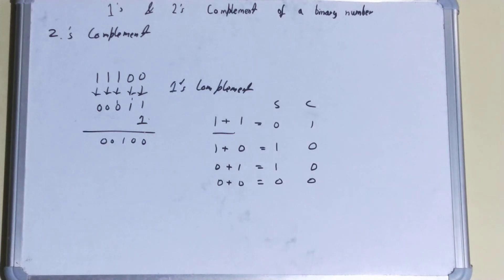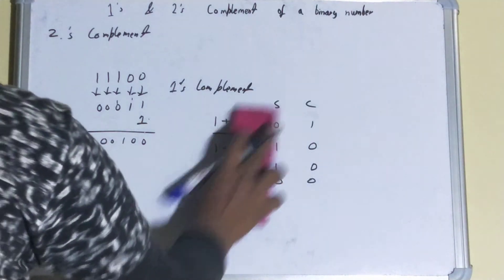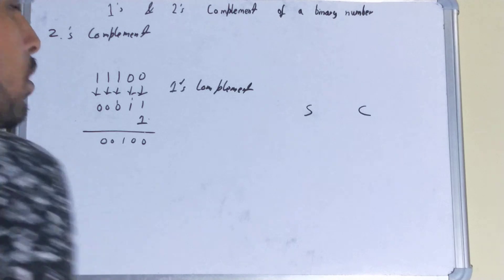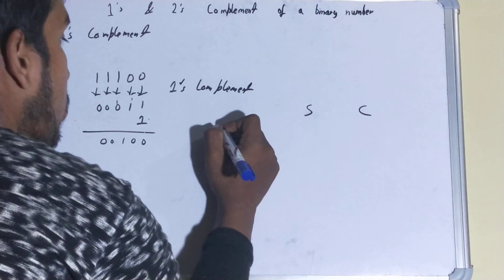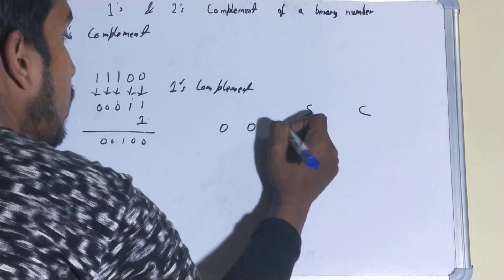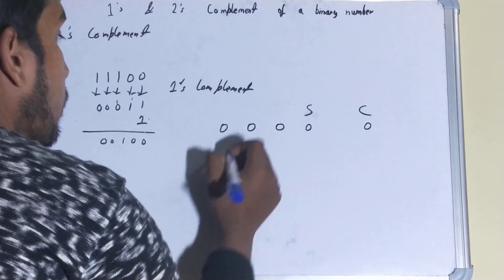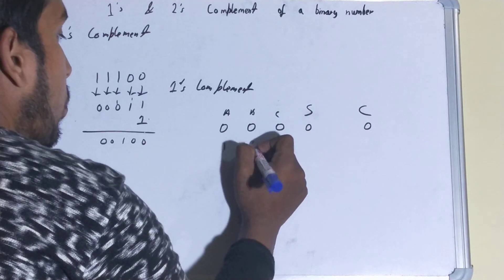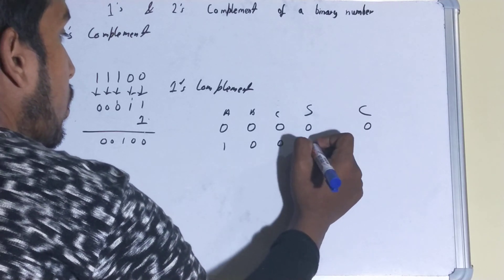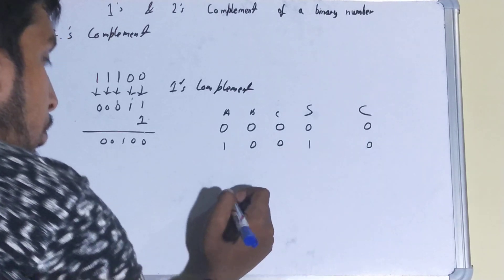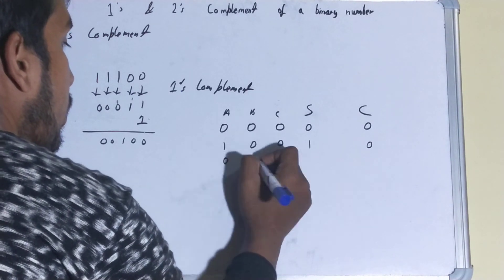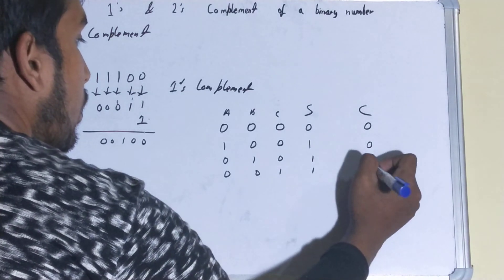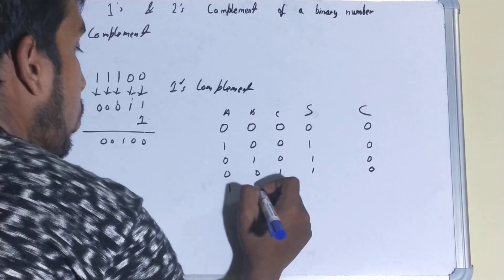One more thing: if you need to add three numbers — for example when carries propagate — the rules are as follows. If all three are zero, sum is 0 and carry is 0. If only one of the three is 1, sum is 1 and carry is 0. If two of the three are 1, sum is 0 and carry is 1.